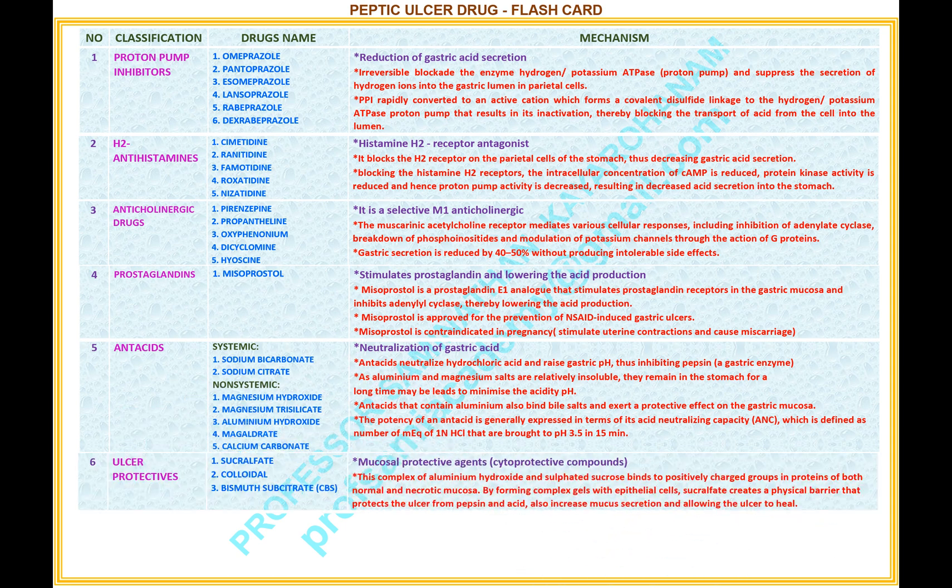Number 6. Name of the classification: Ulcer protectives. Drugs under this classification: 1. Sucralfate, 2. Colloidal Bismuth Substrate (CBS). Mechanism: mucosal protective agents — cytoprotective compounds. Detailed mechanism: this complex of aluminium hydroxide and sulfated sucrose binds to positively charged groups in proteins of both normal and necrotic mucosa. By forming complex gels with epithelial cells, sucralfate creates a physical barrier that protects the ulcer from pepsin and acid, and also increases mucous secretion and allows the ulcer to heal.